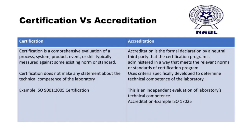The difference between certification versus accreditation: Certification is a process that does not talk about the technical competence of the laboratory, whereas accreditation talks about technical competence. Accreditation is a formal declaration by a neutral third party that a certification program is administered in a way that meets the relevant norms or standards. Once a laboratory is accredited, it means it is actually implementing those certification values, following them and truly obeying the normal standards, building customer confidence. Certification is a comprehensive evaluation of a particular process, system, or product, while accreditation is a higher-level, advanced version — an independent evaluation of the laboratory's technical competence.